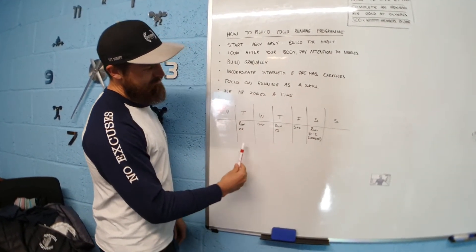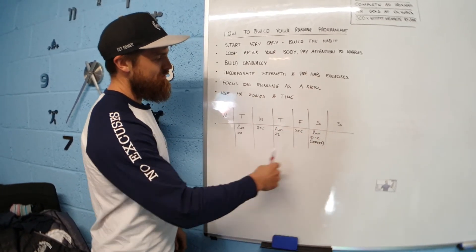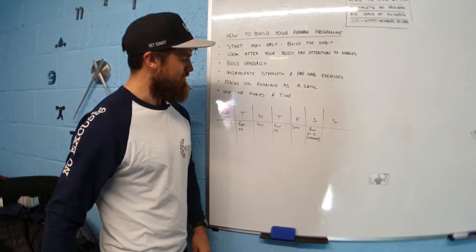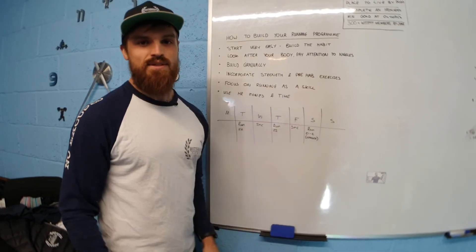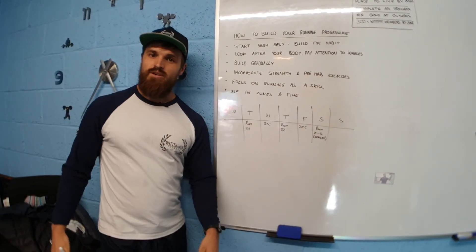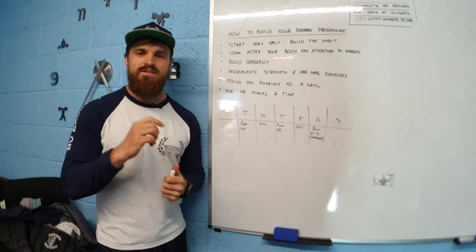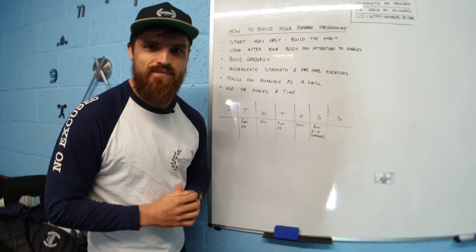You could do like half hour, 45 minutes, whatever the 10% equation is, and then add 10%. If you've got any questions, I'm sure there's lots, just pop them in below or send us a message. Ben at witchingsfitness.com. Thanks for watching.